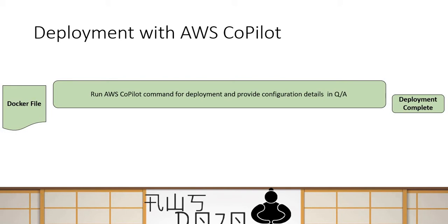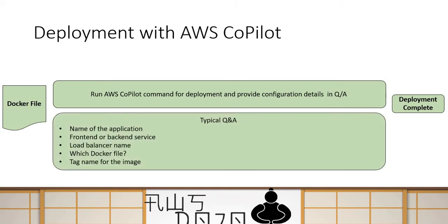When you run the command for deployment, it asks you certain questions to understand how you want to configure it. For instance, it will ask: what is the name of the application? Is it a front-end application or a back-end application? It will determine whether it needs a load balancer or if it's going to be a back-end job kind of application.